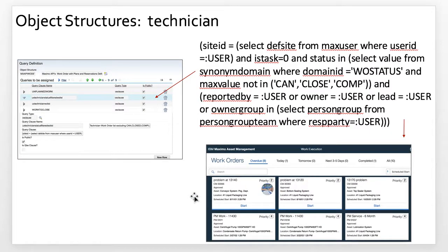Here's another example — the Maximo technician work center. The technician utilizes that same object structure, MXAPIWODetail. As you navigate through the query definition, you can see the two queries that are associated with our maintenance technician, which render the content that the technician can then perform actions on.